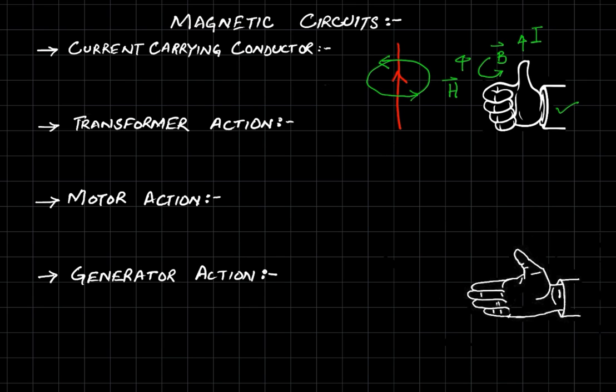The second thing is called transformer action. In a current carrying conductor, if we reverse the direction of current, the magnetic field will become clockwise. So if we have a sinusoidal current, the direction of the magnetic field depends on the direction of current — counterclockwise on the positive cycle when current moves upward, and clockwise when current moves downward.